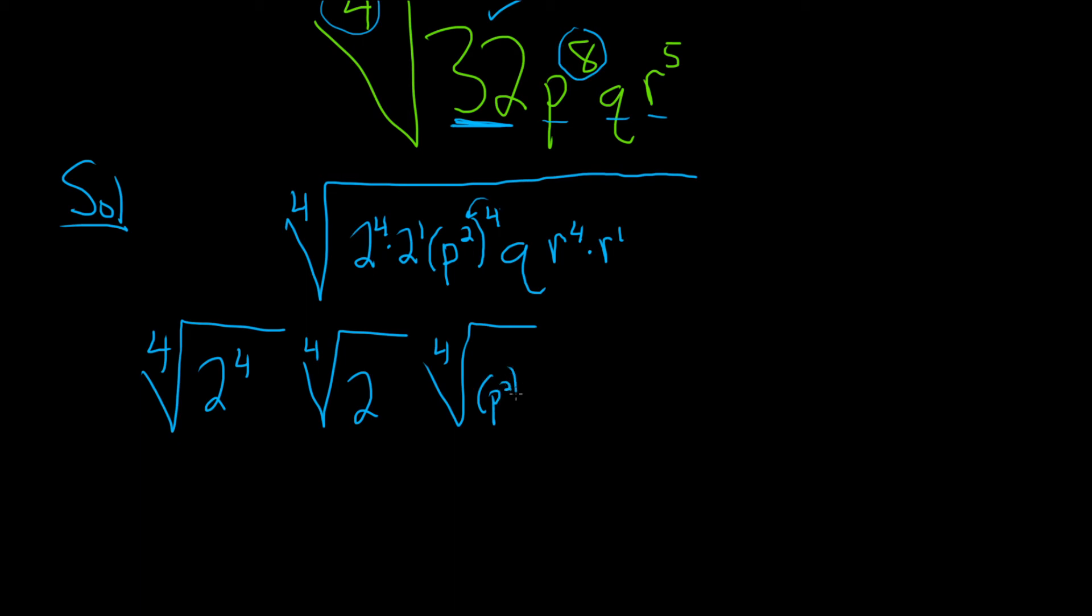So P squared to the 4th. Then the next one is the 4th root of Q. And then the 4th root of r to the 4th. And the 4th root of r. And you can skip steps. You know, all the things with 4s are going to go away. Like, this will cancel. So, boom. So we get just 2, 4th root of 2.